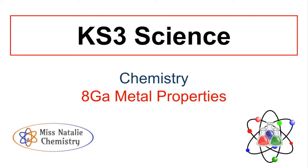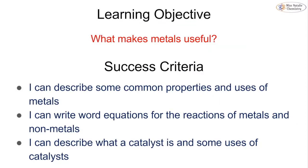In this video we're going to be looking at topic 8GA, which is properties of metals, as part of the Exploring Science course for Key Stage 3, year 8 chemistry. Our learning objective is to look at what makes metals useful. By the end of this lesson you should be able to describe some common properties and uses of metals, write word equations for reactions of metals and non-metals, and describe what a catalyst is and explain some of its uses in everyday life.